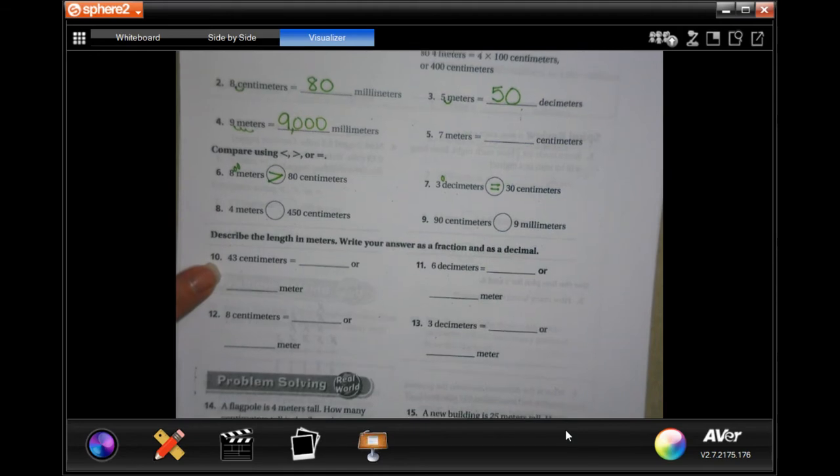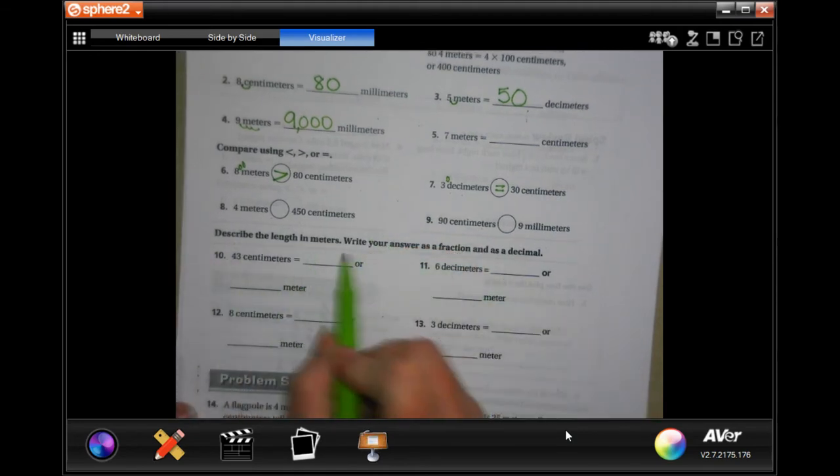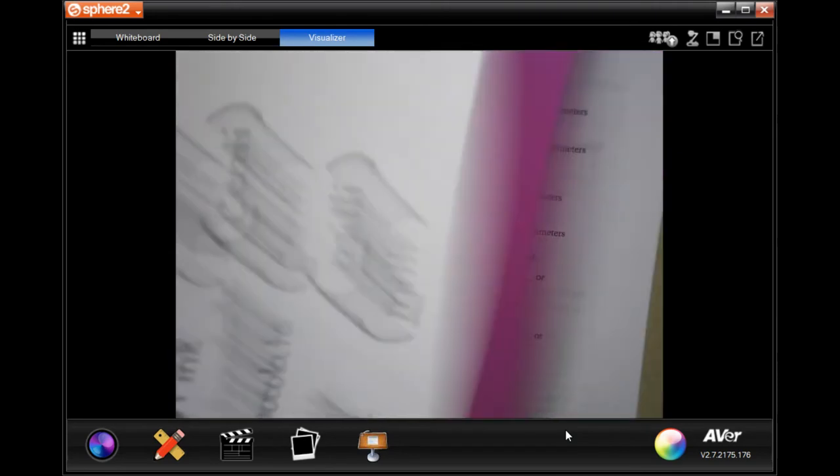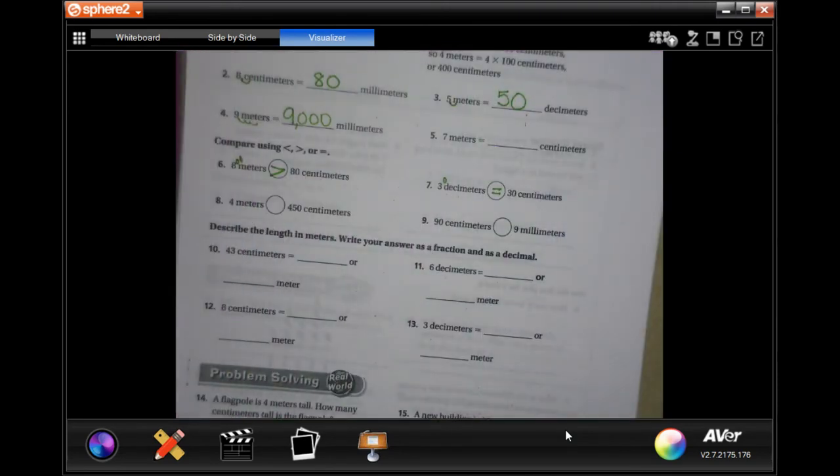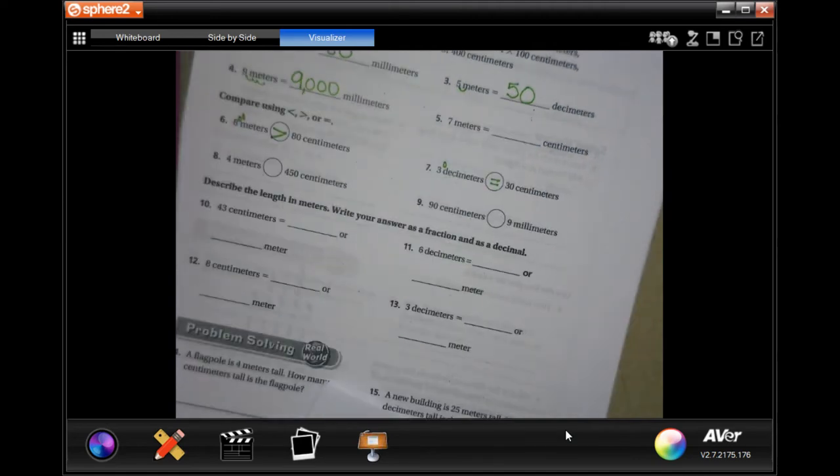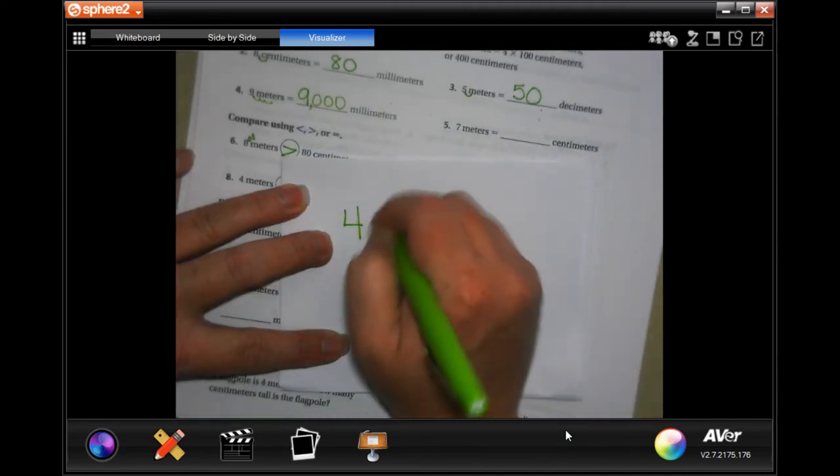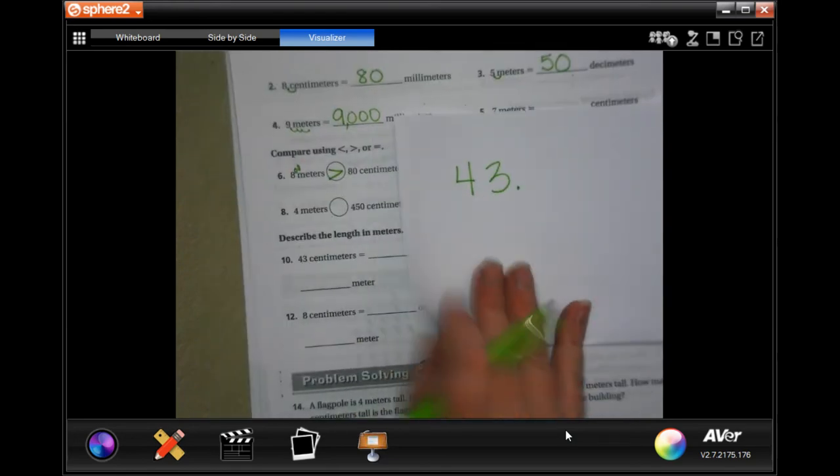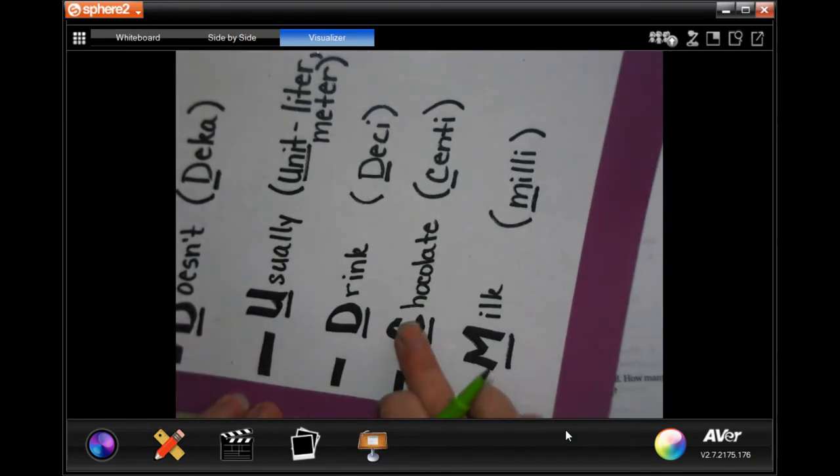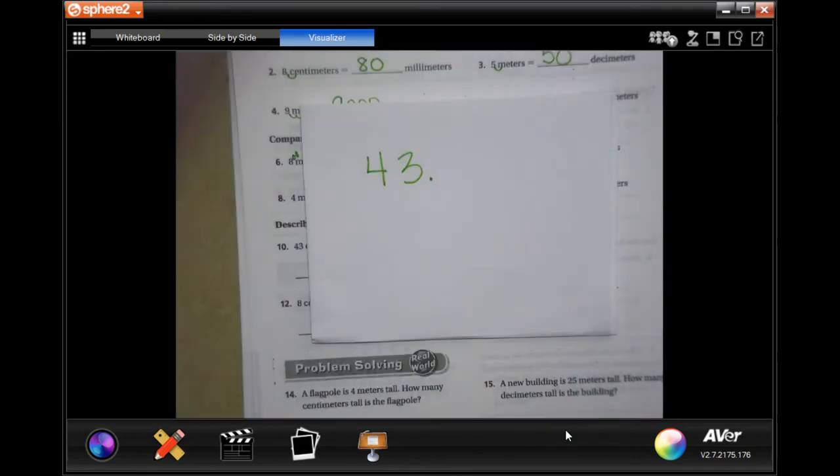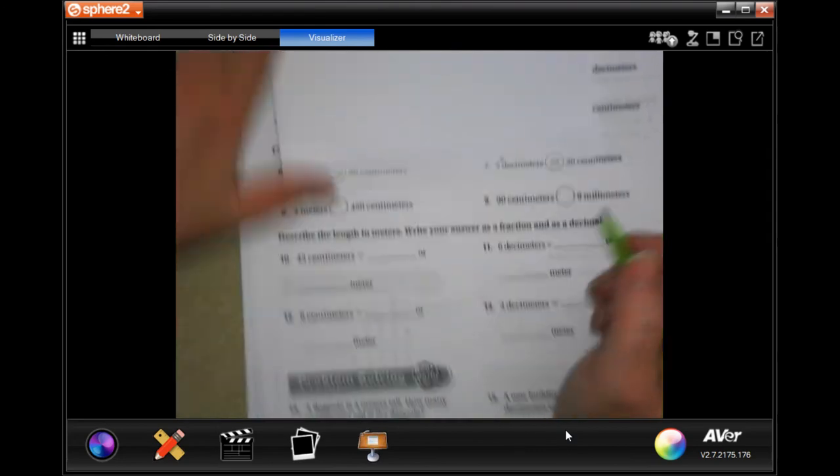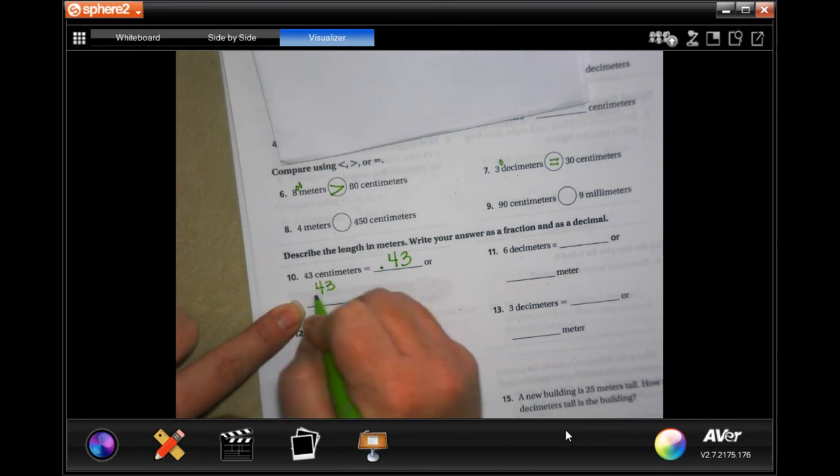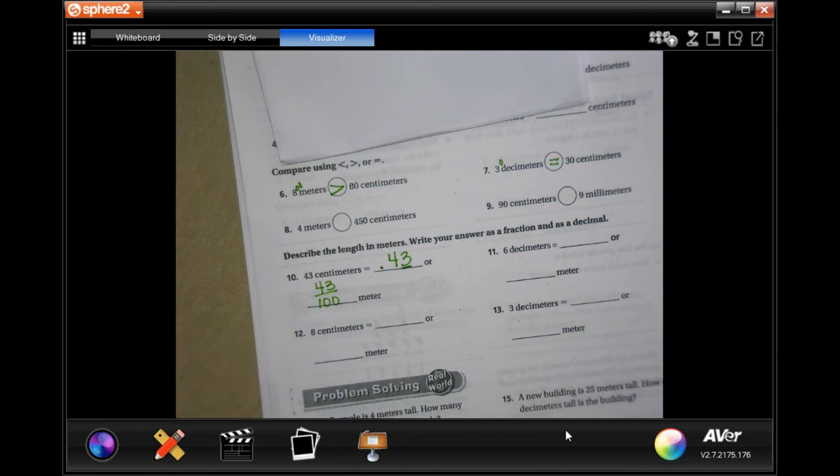Describe the length in meters. So we're moving from centimeters to meters. So we currently have 43 with the decimals right here. Now they want us to go from centimeters to meters. So we're going to go back one, two places to go to the meters. One, two places, that's point four three, four forty-three hundredths because that three is in the hundredth spot of a meter.